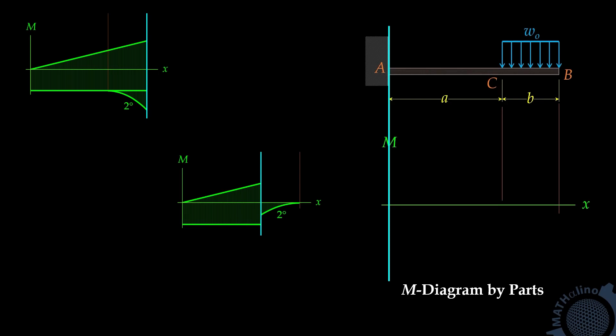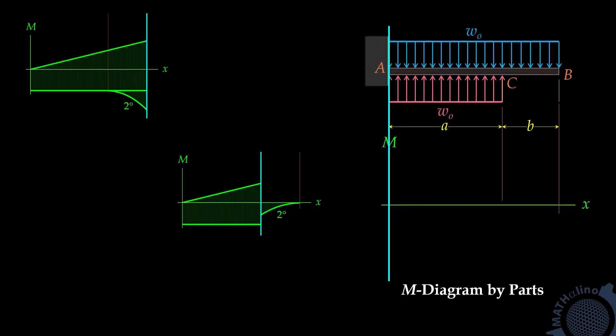For us to create the moment diagram properly in this case of loading, we are going to extend the uniform load up to point A. Of course, this loading is now not equivalent to the original load. To counter the effect of the additional load, we are going to create another uniform load that is upward from A to C. In this case, the net load of these two uniform loads is equivalent to the given load. Now, both the upward and the downward loads are continuous from the moment center A to the end of the load, so we can now draw the moment diagram by parts properly.